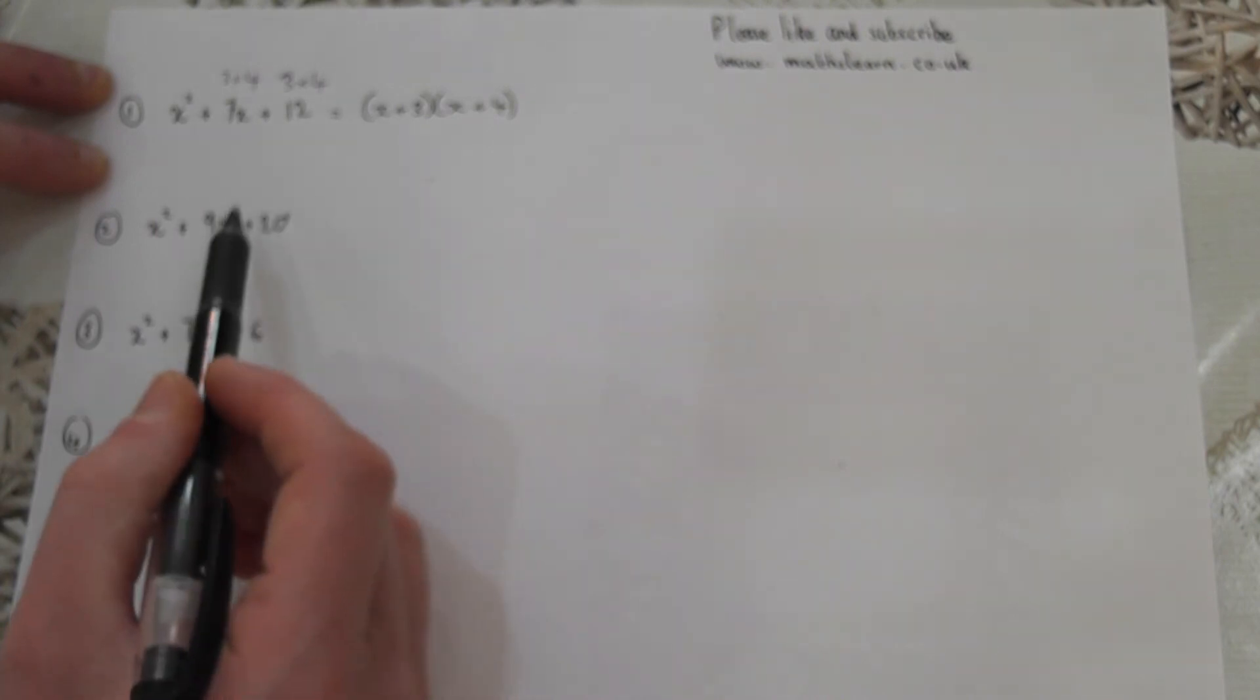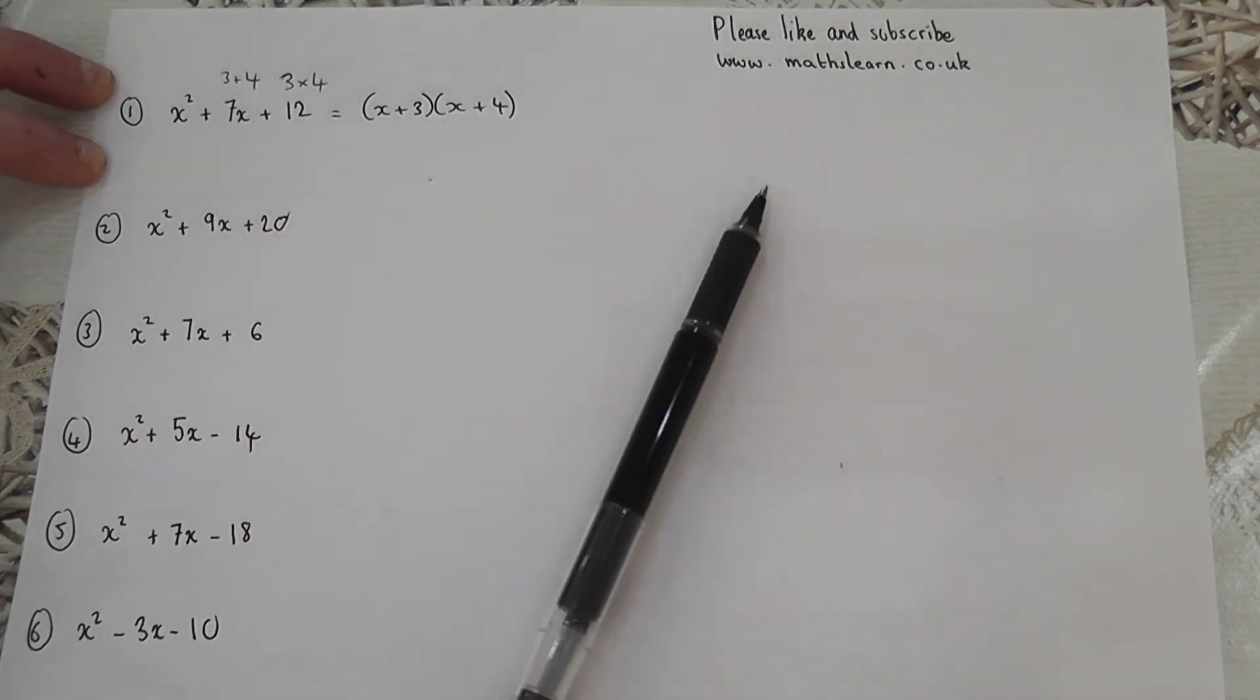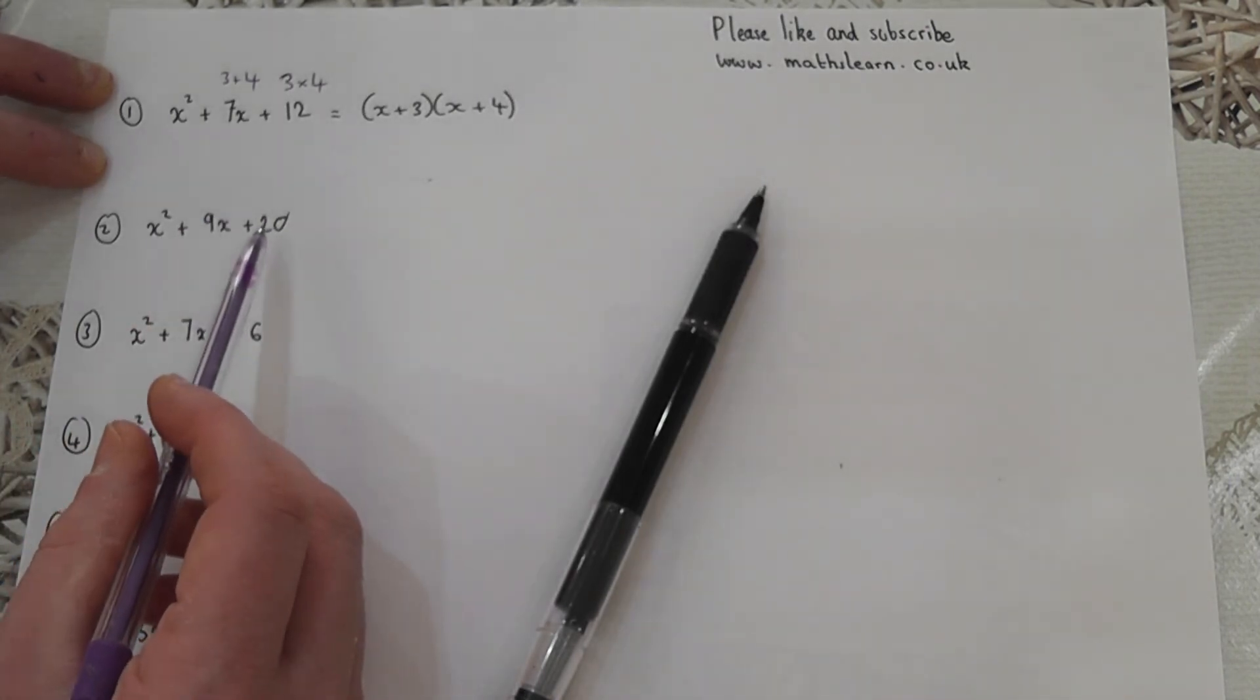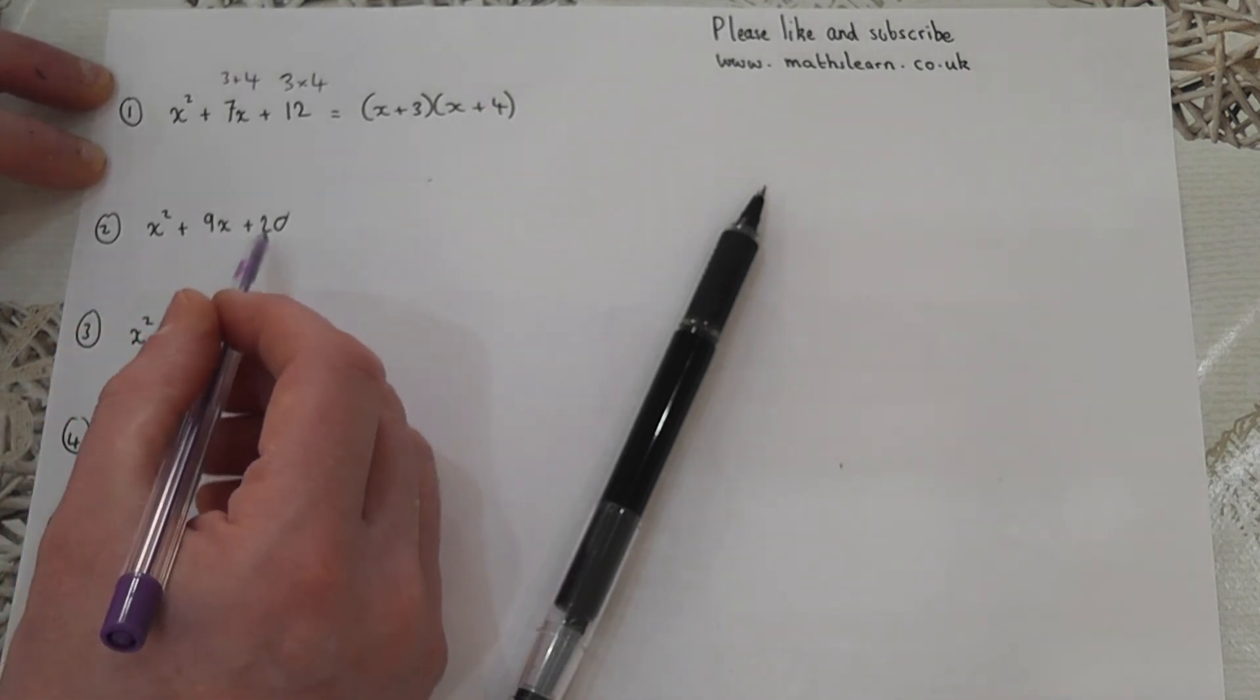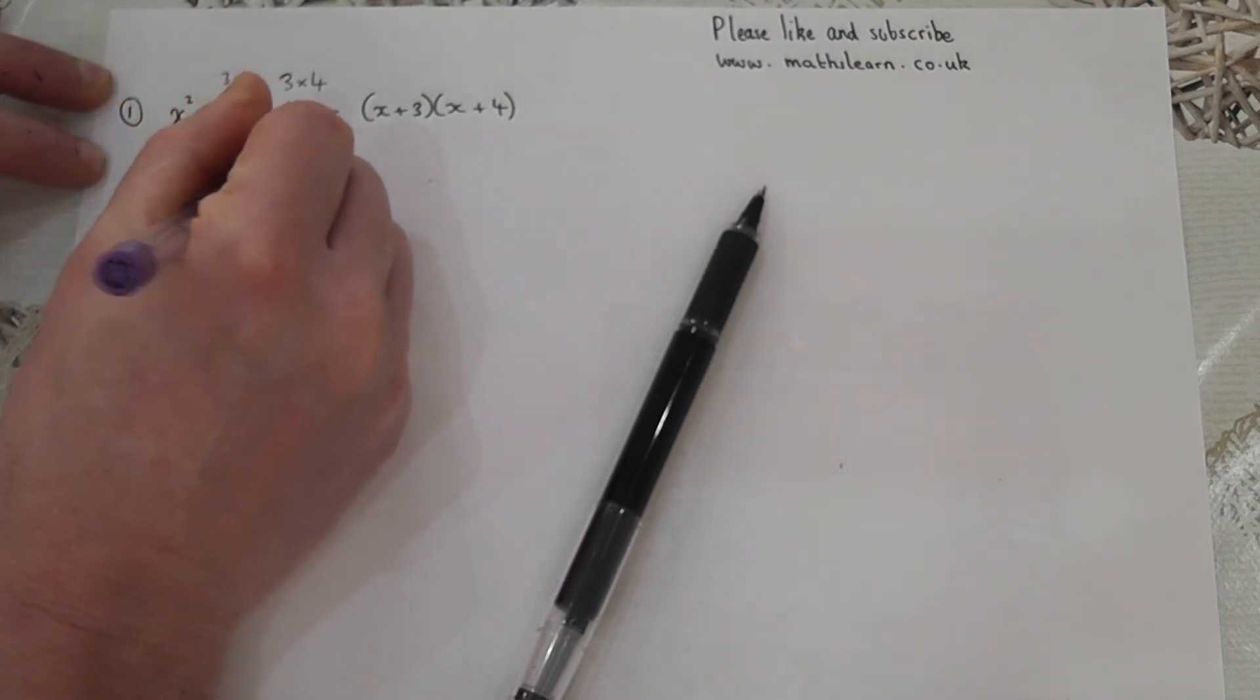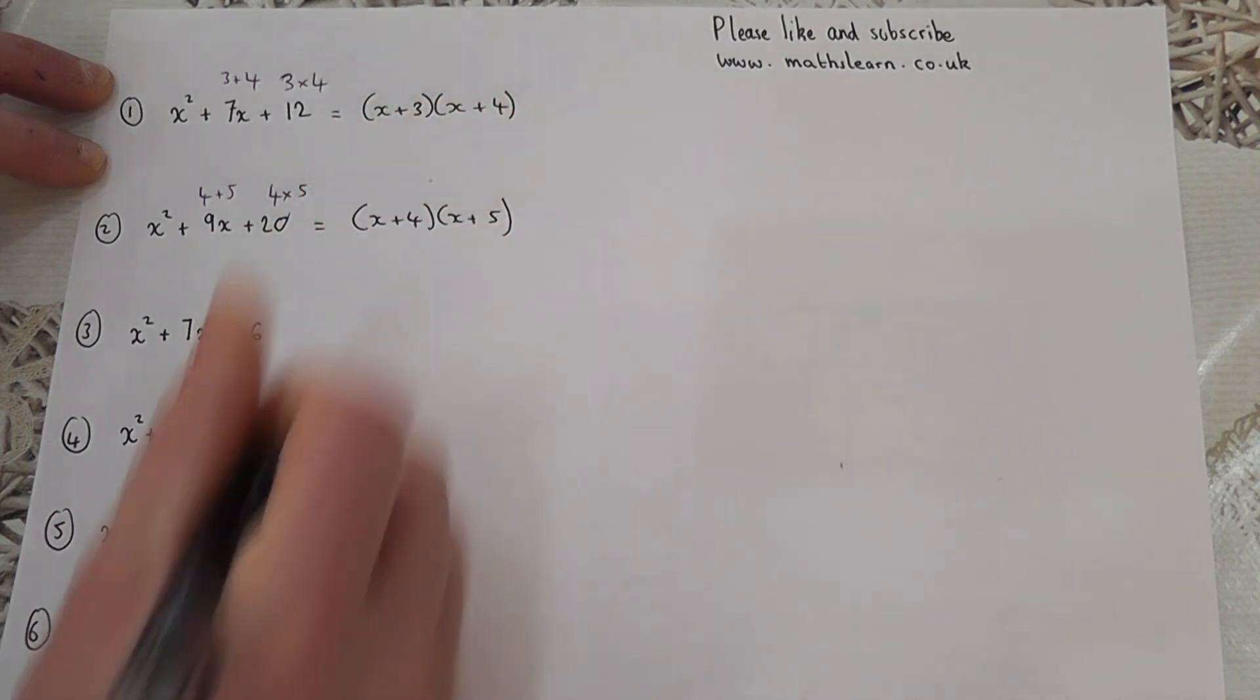We're going to go through five more examples, and then four extension questions, all linked to the skill called factorizing. The second one is x squared plus 9x plus 20. I want two numbers that times to make 20 and add to make 9. The factor pair that works is 4 times 5, because 4 times 5 is 20, and 4 plus 5 is 9. So the answer is x plus 4 and x plus 5.